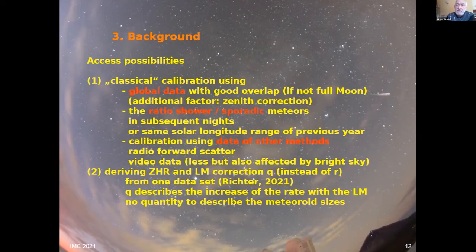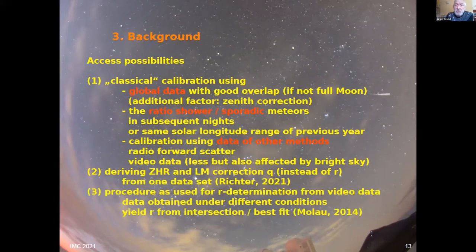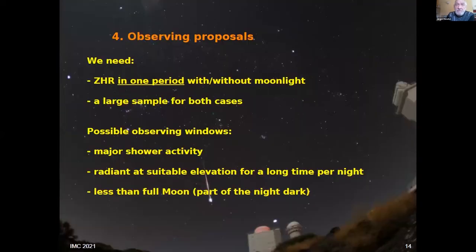From a theoretical point of view, this has not been extensively used. Jango Richter suggested in a paper in WGN this year a method to derive the ZHR and limiting magnitude correction using a parameter — not r, but called Q — which describes the increase of rate with limiting magnitude, as a practical test. Or we could also adapt the method suggested by Zoco for determining the population index from video data, by looking at graphs of magnitude distributions and finding the best fit for observations grouped in different limiting magnitude ranges.